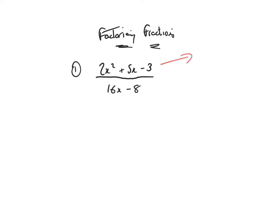Let's first of all take the trinomial on top to the side and see if we can deal with that. Remember for these ones you get the number at the front and the back and multiply them together to get minus 6. The product is negative, so the signs will therefore be different. I'm looking for two numbers that multiply to give minus 6 and add together to give 5.